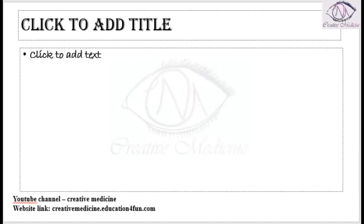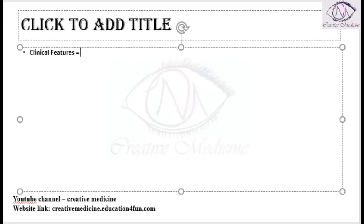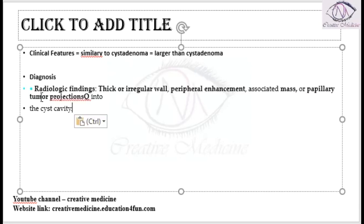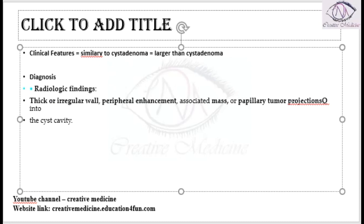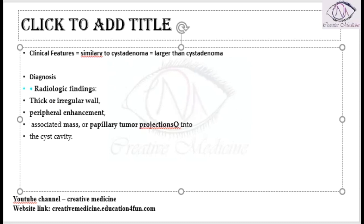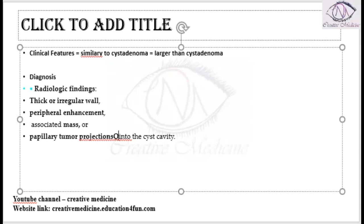The clinical features of biliary cystadenocarcinoma are similar to cystadenoma, except that it is a larger cyst. On diagnosis, radiological findings by CT scan will show the presence of a thick irregular wall with peripheral enhancement, and associated mass or papillary projections are seen into the cystic cavity.